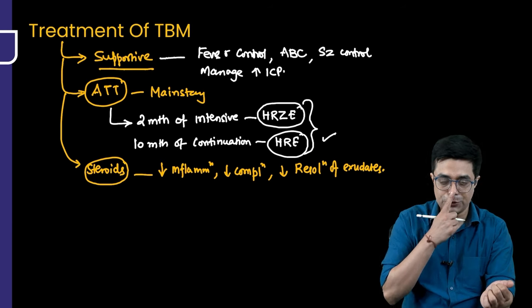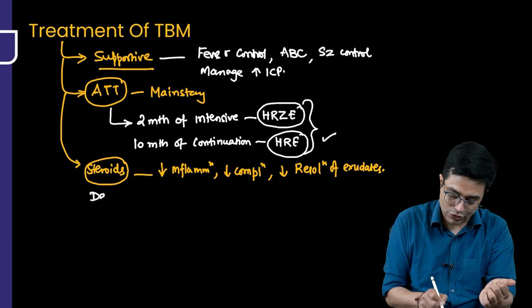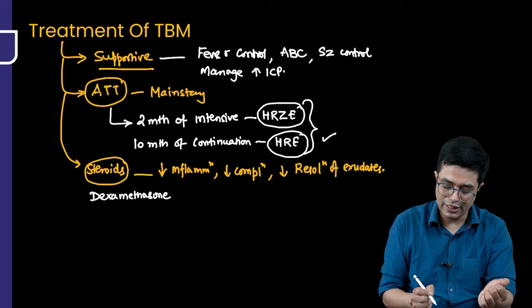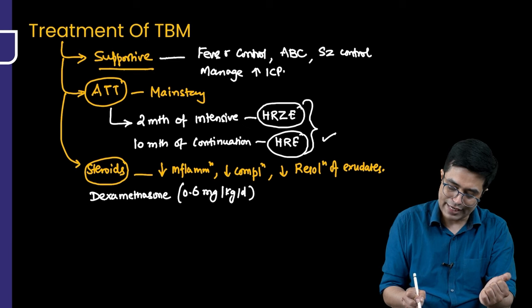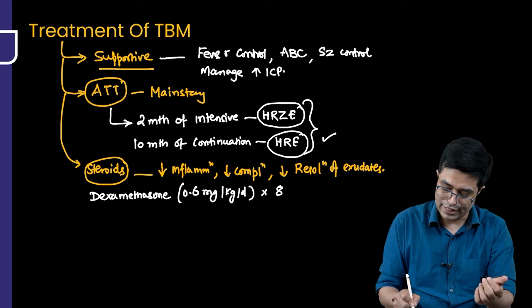Dexamethasone is used at 0.6 mg/kg/day for 8 to 12 weeks. Current IAP 2022 protocol recommends about 8 weeks total.